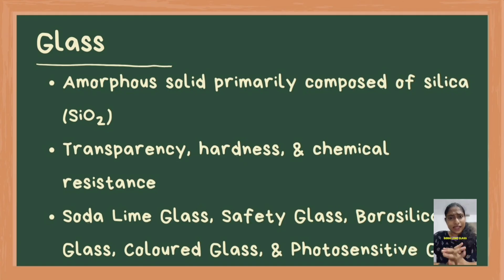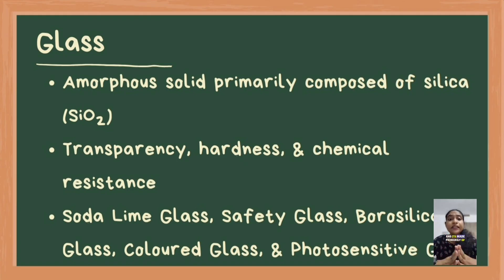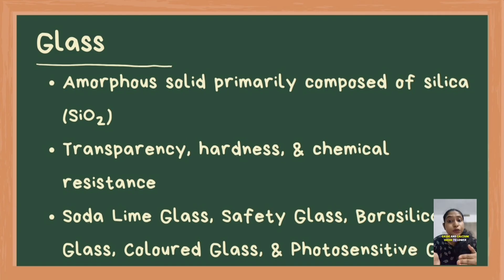Soda lime glass is the most common type of glass used in everyday items like windows and bottles. It's made primarily of silica with added sodium oxide and calcium oxide to lower the melting point and improve durability.